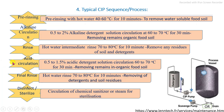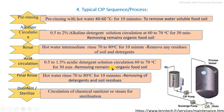The fourth step is the acid circulation or acid cleaning process using 0.5 to 1.5 percent acid — such as nitric acid solution or hydrochloric acid solution — at 60 to 70 degrees Celsius, circulated continuously for 30 minutes to remove organic food soils present in the processing line. Then a final rinsing with hot water at 70 to 80 degrees Celsius for 10 minutes completely removes remaining soils and detergents.